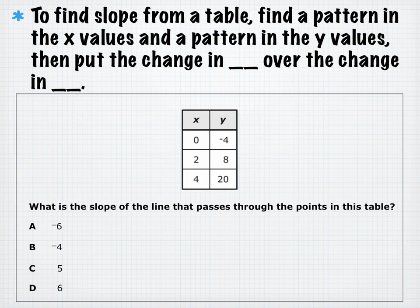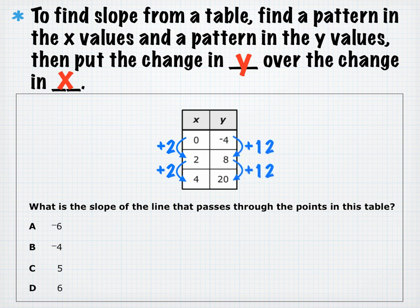To find slope from a table, find the pattern in X values and Y values, then put the change in Y over the change in X. In this table, X increases by 2 and Y increases by 12, giving a slope of 12 over 2 equals 6, answer D.